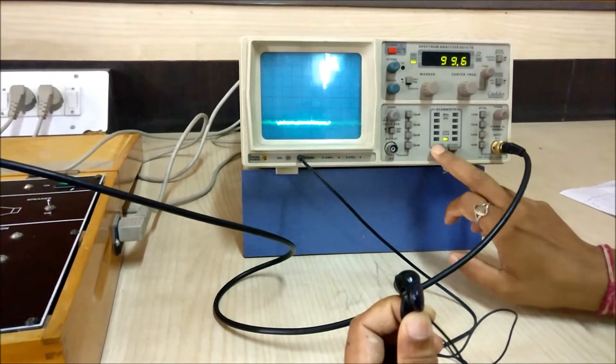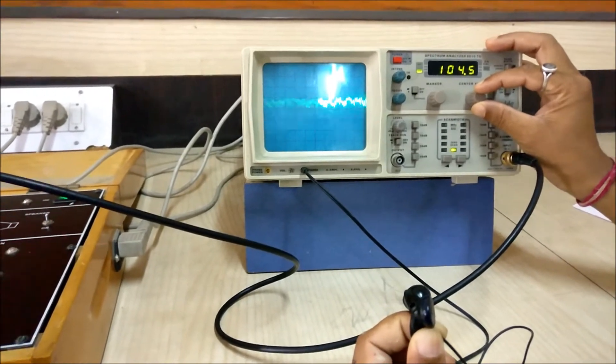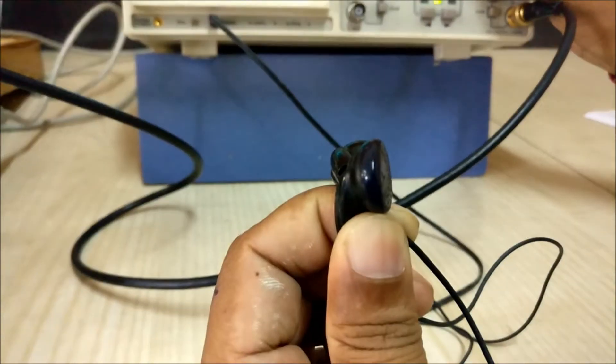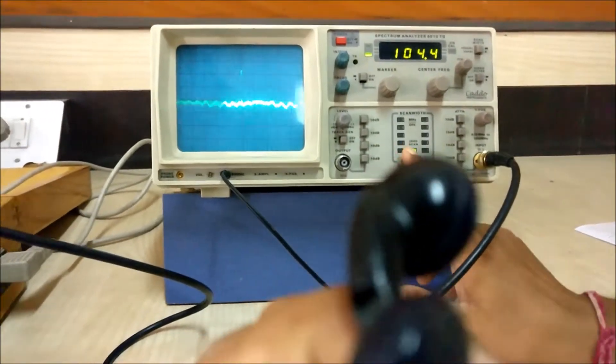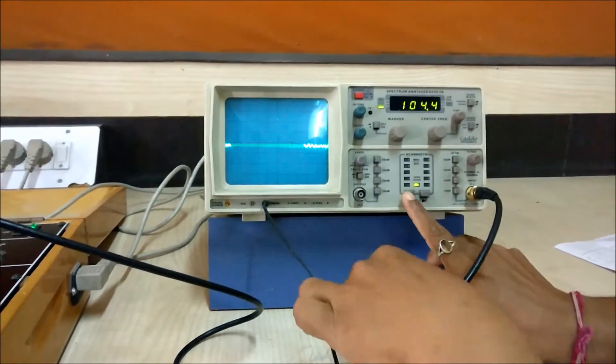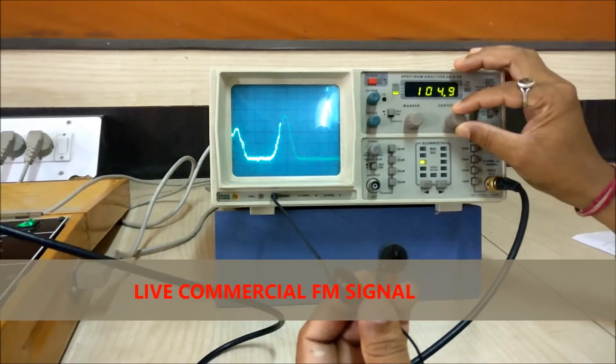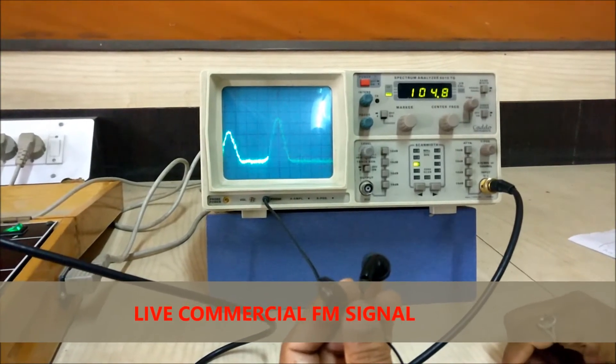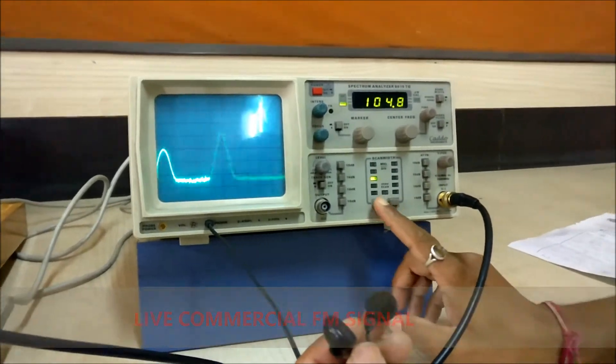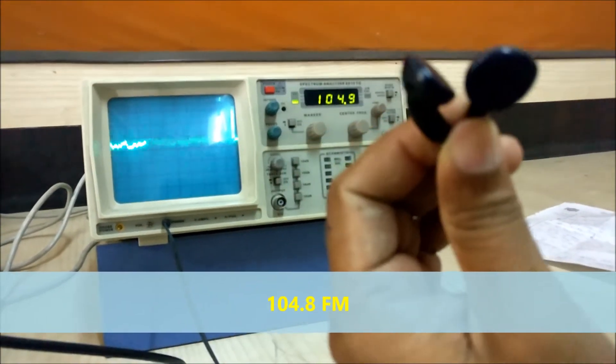And then set it to 104 megahertz. So we can listen to this signal now. How this signal is coming, we can see the spectrum of the signal. If we set it to 104 megahertz, now the signal is not coming since we have increased the scan width, the noise is added. So we have to keep the scan to zero to listen to our signal. We can see at 104.8 FM is coming.